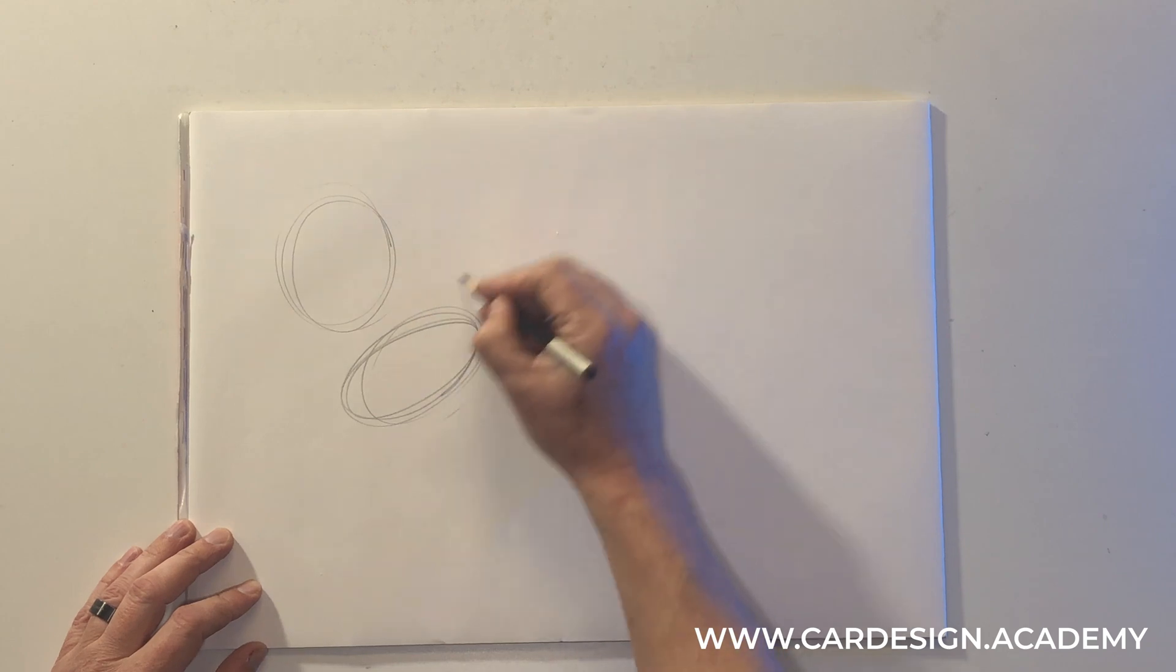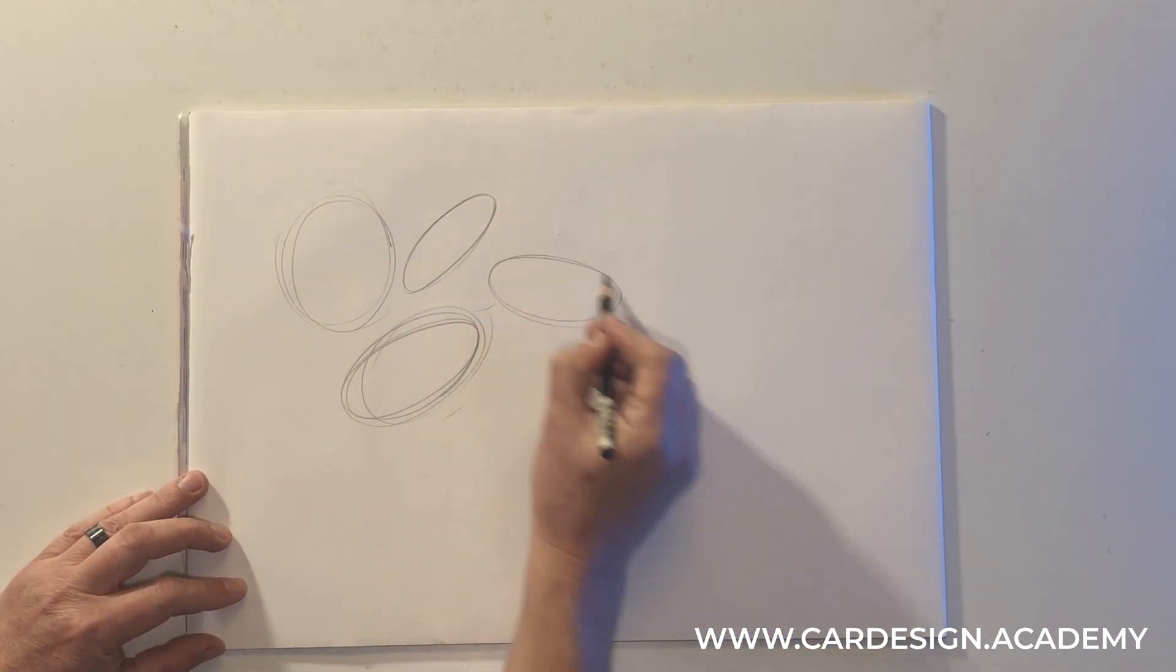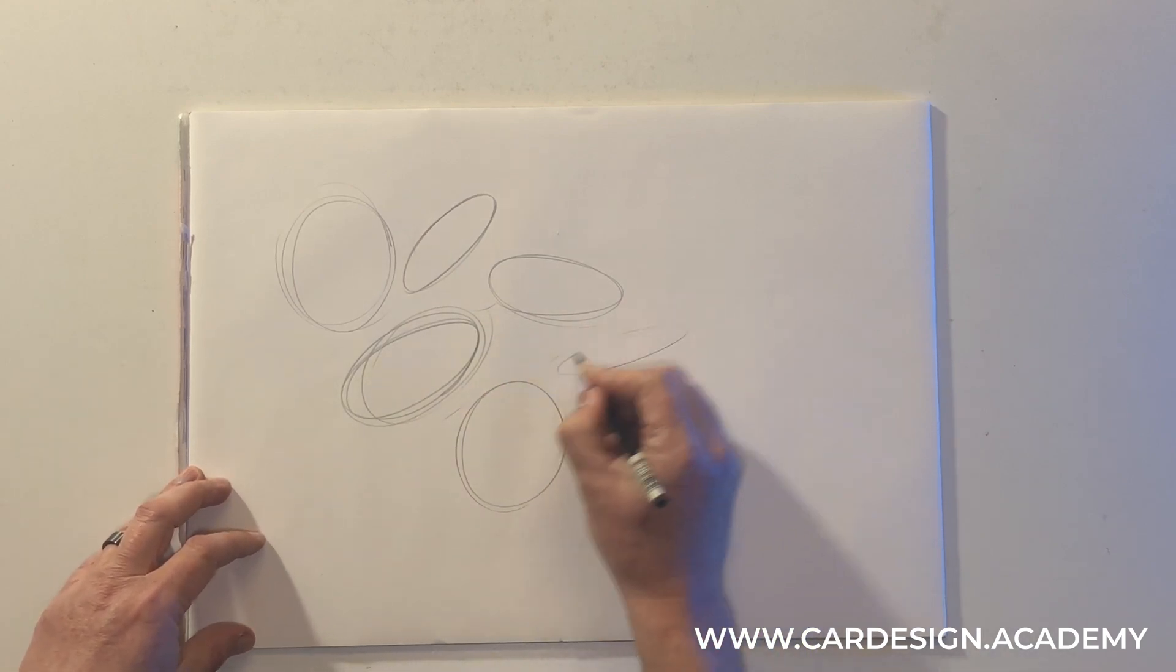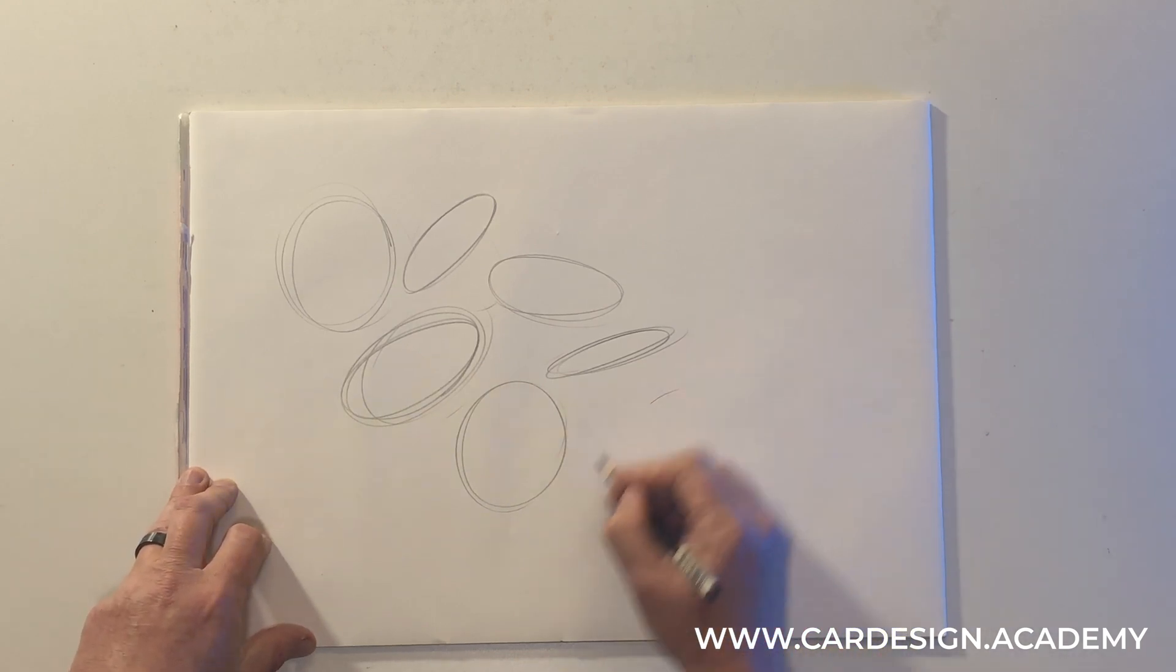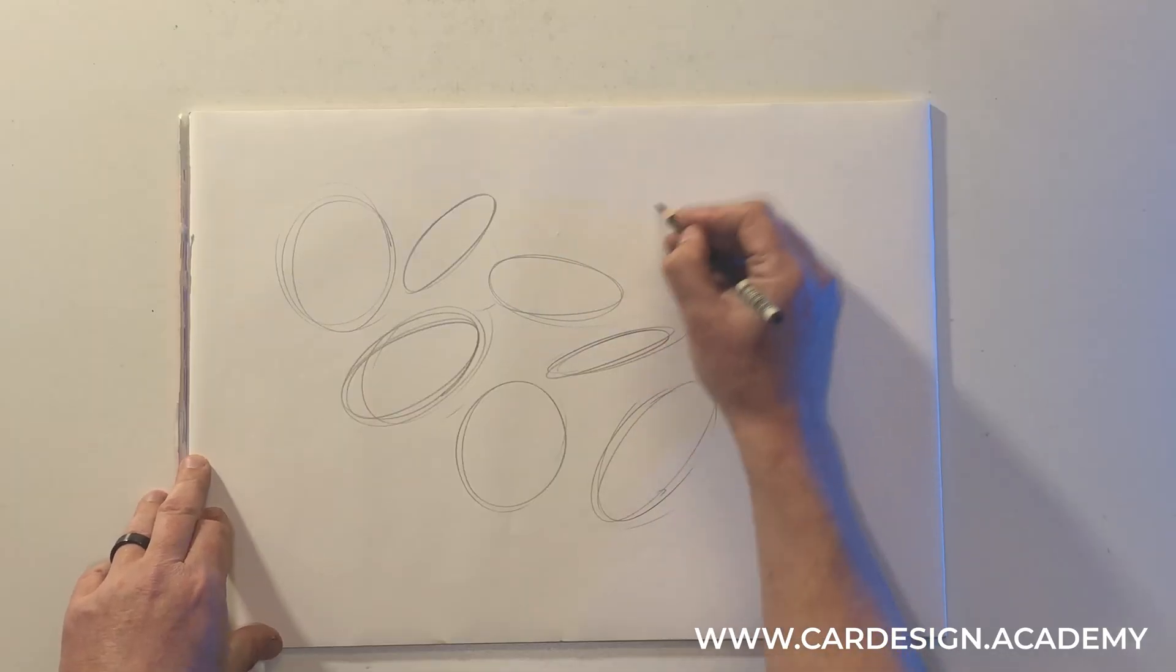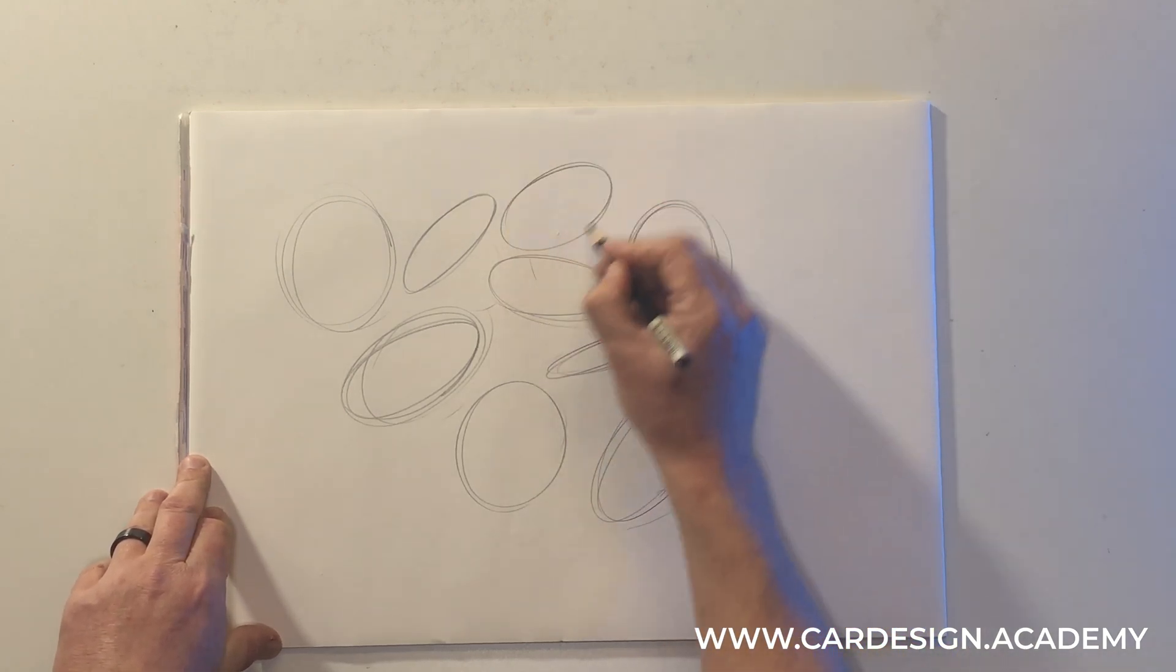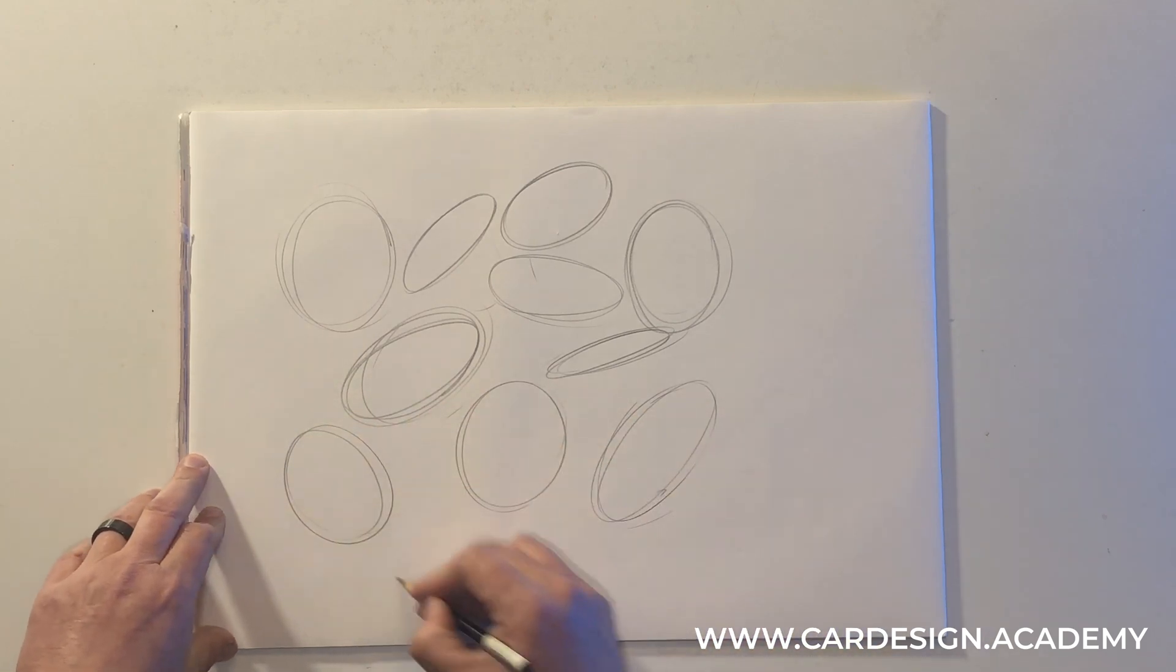You can see I'm keeping my hand fairly loose. I'm not really worried too much about being perfect. Some are more circular, some are more foreshortened. I'm just warming up using the whole arm, not from the wrist but from the whole arm. Not trying to be too perfect, just trying to stay loose and confident.